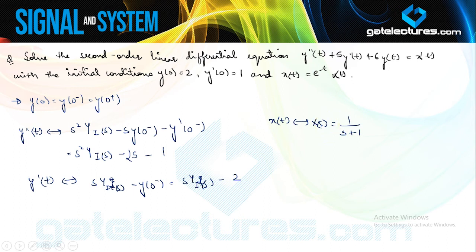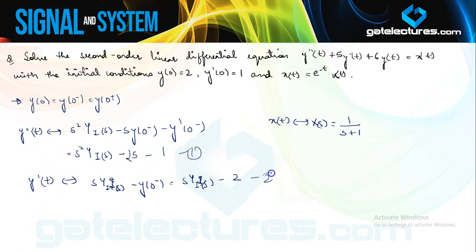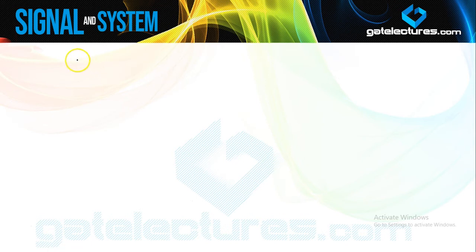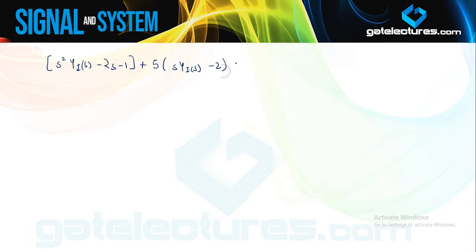We are not defining ROC in case of unilateral transforms, as we have seen already, because the ROC is unique — you do not need to define that. Now if you take the Laplace transform of the complete linear differential equation, substituting y double dash and y dash from equations 1 and 2, you get: s²·Y(s) minus 2s minus 1 plus 5·(s·Y(s) minus 2) plus 6·Y(s) equals 1/(s+1).